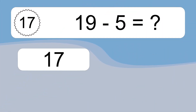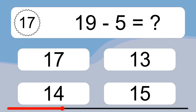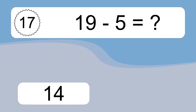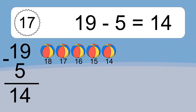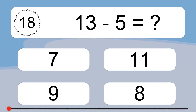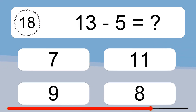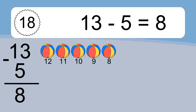19 minus 5 equals what? 19 minus 5 equals 14. Let's count it. 18, 17, 16, 15, 14. 13 minus 5 equals what? 13 minus 5 equals 8. Let's count it. 12, 11, 10, 9, 8.